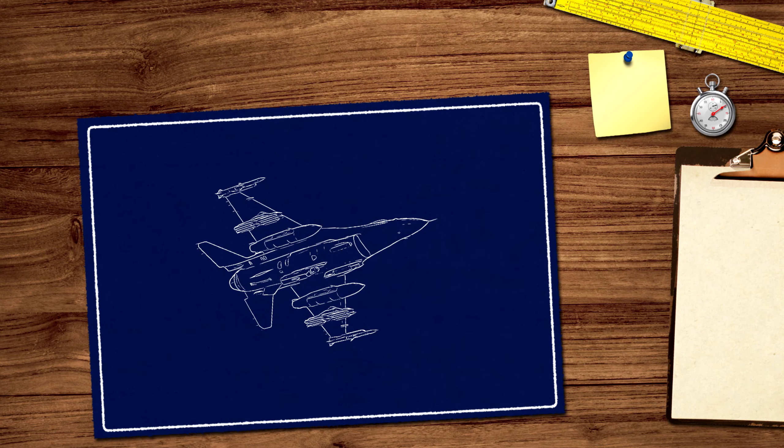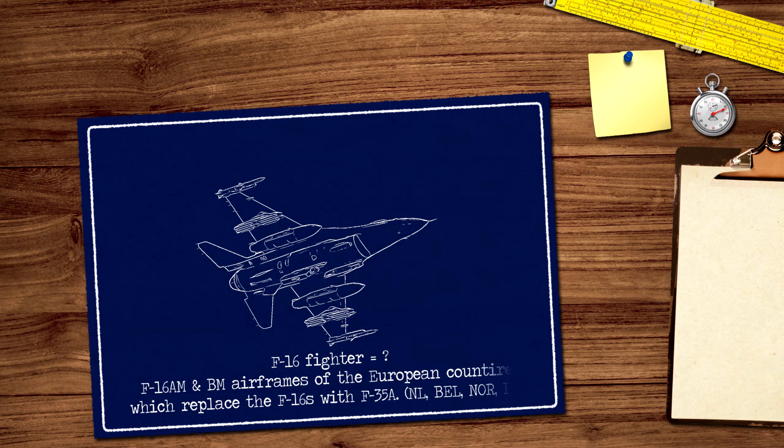The term F-16 fighter plane shall be narrowed down. In this case it covers the airframes what the European NATO member states can hand over to Ukraine. These are redundant or will be redundant soon with the transition to the F-35 fighter. These are the single-seat F-16 AM and two-seat BM variants of the Viper, which were manufactured in the 1980s. These are mostly known as MLU variants. MLU means mid-life update. These airframes had been modernized during the MLU program, which was initiated in the late 1990s and lasted until the 2020s.